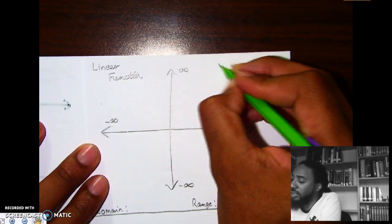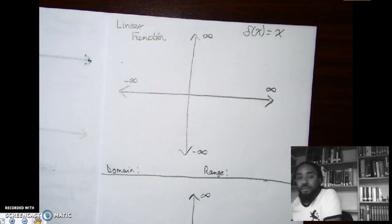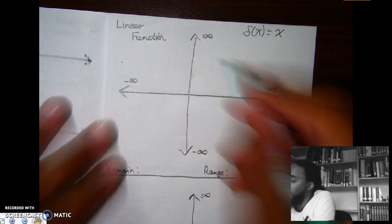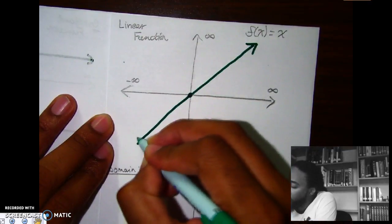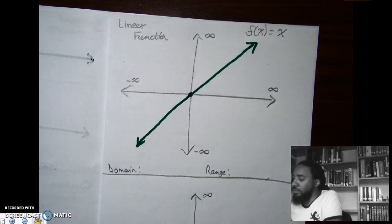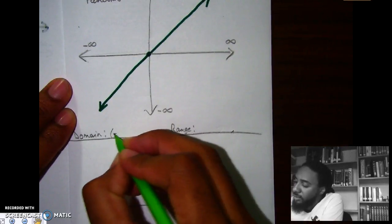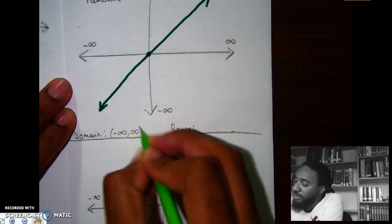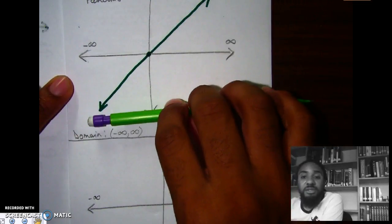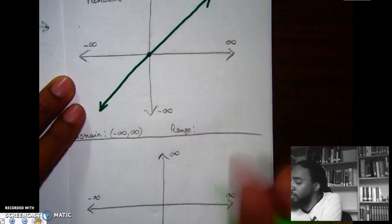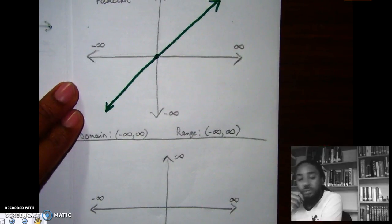The third graph is the linear function — f of x equals x. Hopefully you remember this one too. It's just a diagonal line going up from left to right. Arrows on both sides, so domain is negative infinity to positive infinity. For range, going from bottom to top there are arrows on both ends too, so it's also negative infinity to positive infinity.